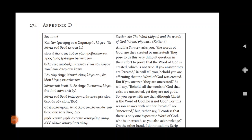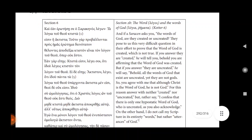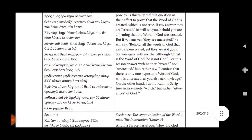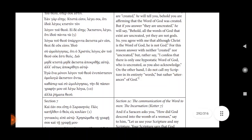Section 2b, The word Logos and the words of God, Logia, Rimata. Quotex 6. And if a Saracen asks you, the word of God, are they created or uncreated? They pose to us this very difficult question in their effort to prove that the word of God is created, which is not true. If you answer they are created, he will tell you, Behold, you affirm that the word of God was created. But if you answer they are uncreated, he will say, Behold, all the words of God that exist are uncreated, yet they are not God.